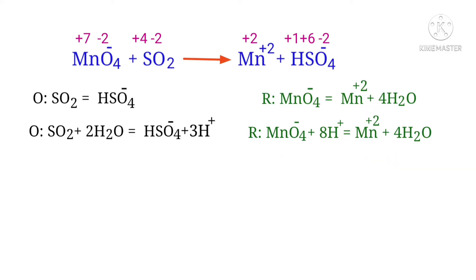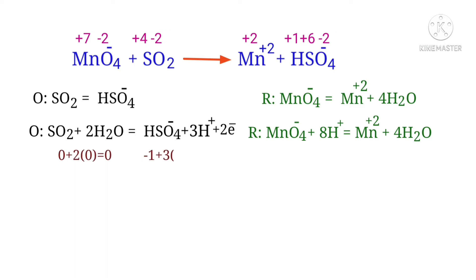For a redox reaction, the addition of charges should be equal on both sides. So try it in the oxidation half reaction. Both sides are not equal. To make them equal, you should add electrons — you can't add protons. So adding two protons to the left side to make it equal to plus 2 is wrong. But you can add two electrons to the right side to make it equal to zero. Now the charges on the oxidation half reaction are equaled.